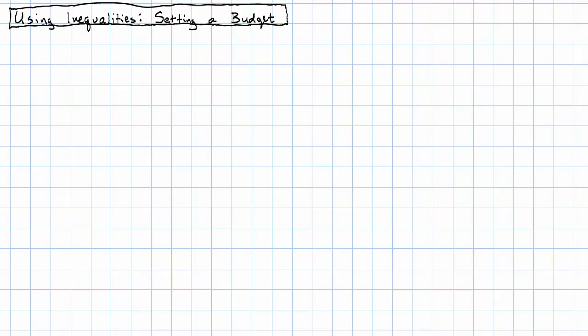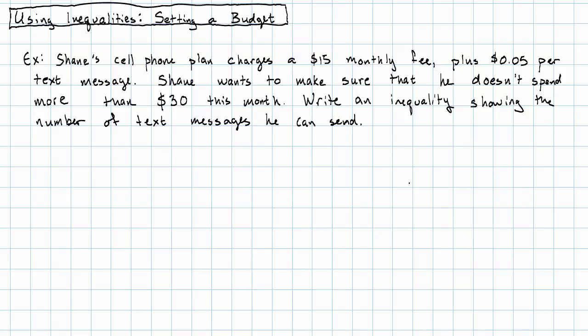So, for example, say Shane's cell phone plan charges a $15 monthly fee, plus 5 cents per text message. Shane wants to be sure he doesn't spend more than $30 this month. Write an inequality showing the number of text messages he can send.